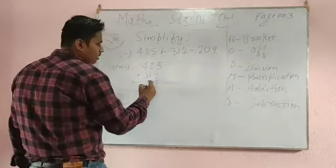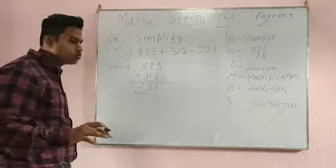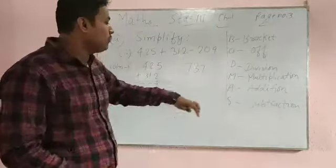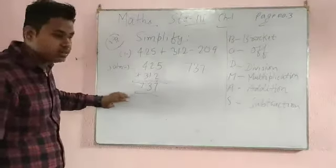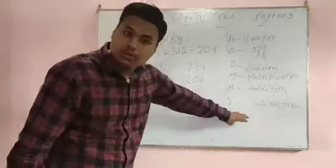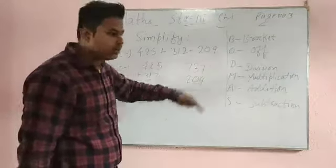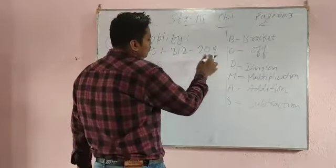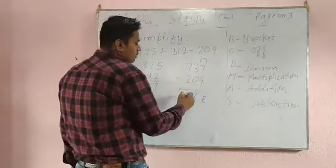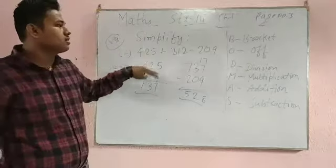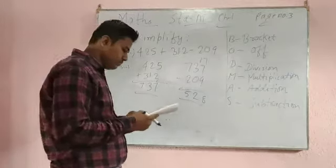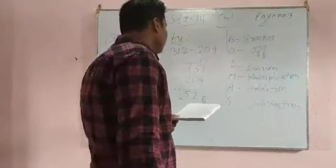But here is only addition and subtraction, so follow the BODMAS rule. Add first - 425 and 312. 5 plus 2 is 7, 2 plus 1 is 3, 4 plus 3 is 7. Whatever comes, 737, now minus 209. You have to subtract.